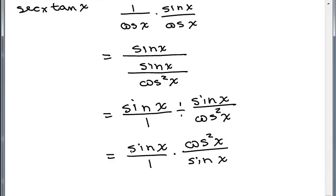The sines cancel, and that's all that cancel. So I have cosine squared x over 1, which is the same thing as cosine squared x.